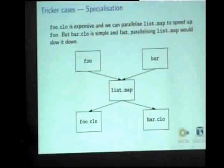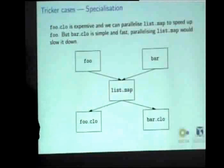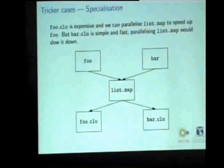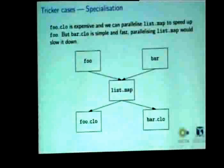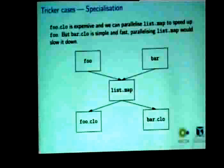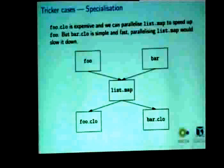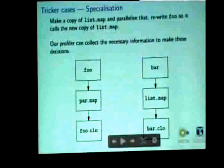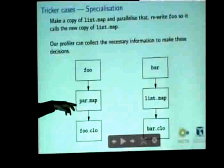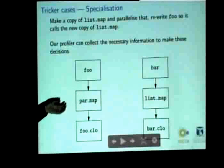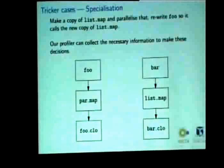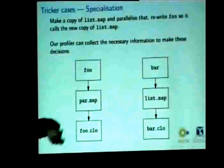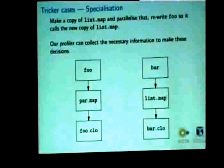But if bar's closure is cheap, we don't want to have to parallelize list map because that will actually make bar slower because we're doing too much management of parallel tasks. So in cases like this, what we want to do is take a copy of map over lists, transform it to become parallel map, and then rewrite Foo so it uses parallel map. And that way, we're leaving the performance of bar as it is while speeding up Foo.